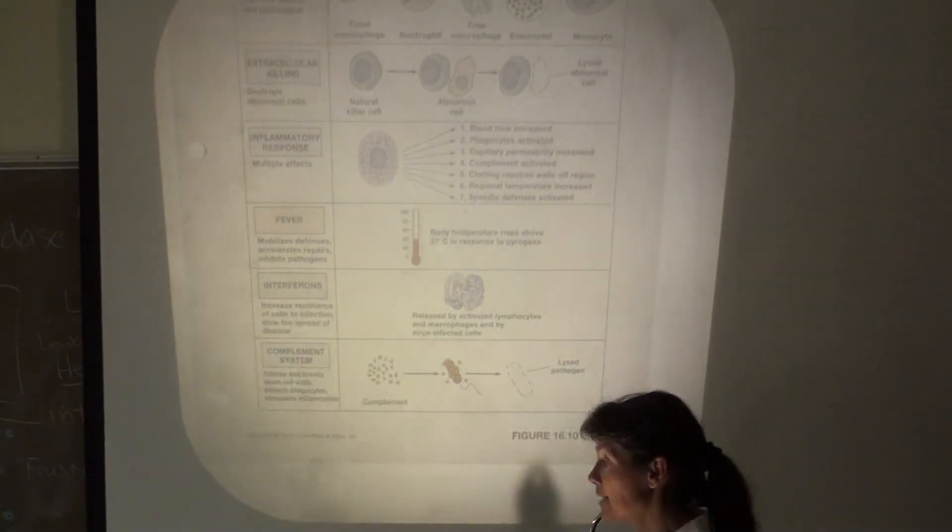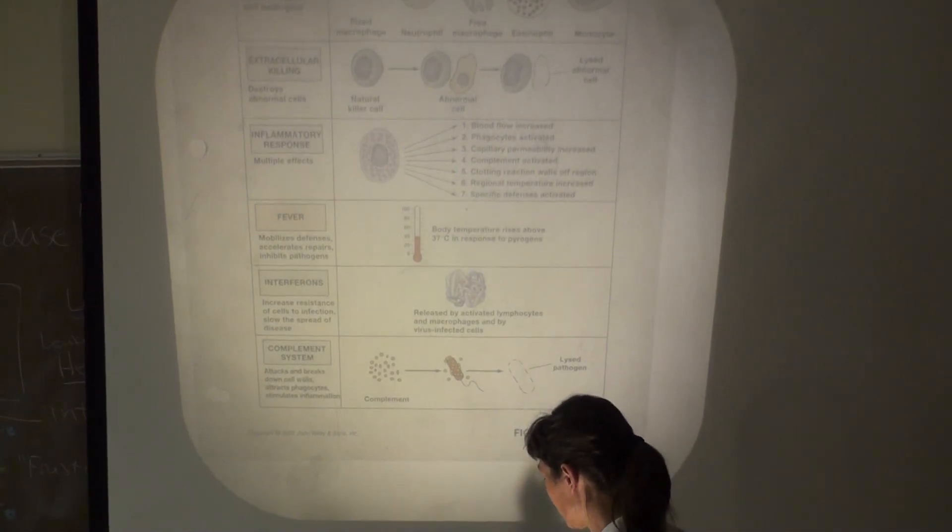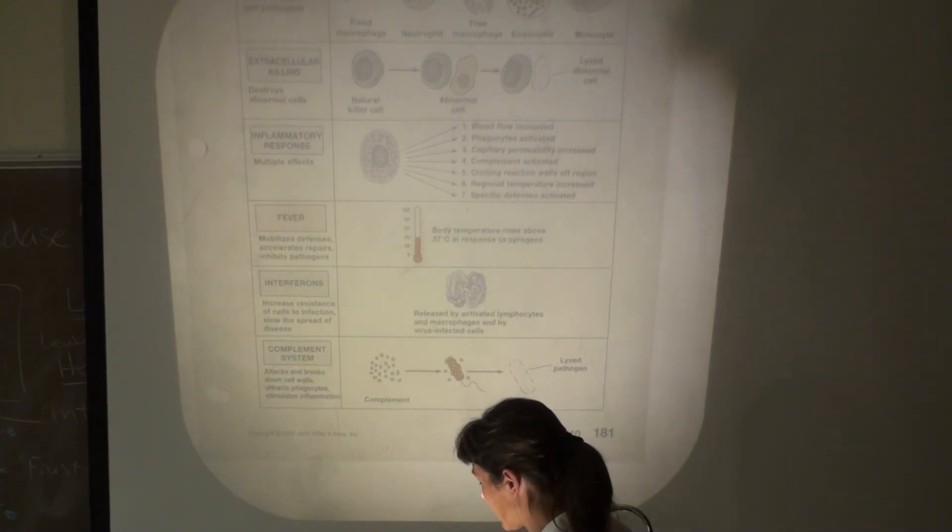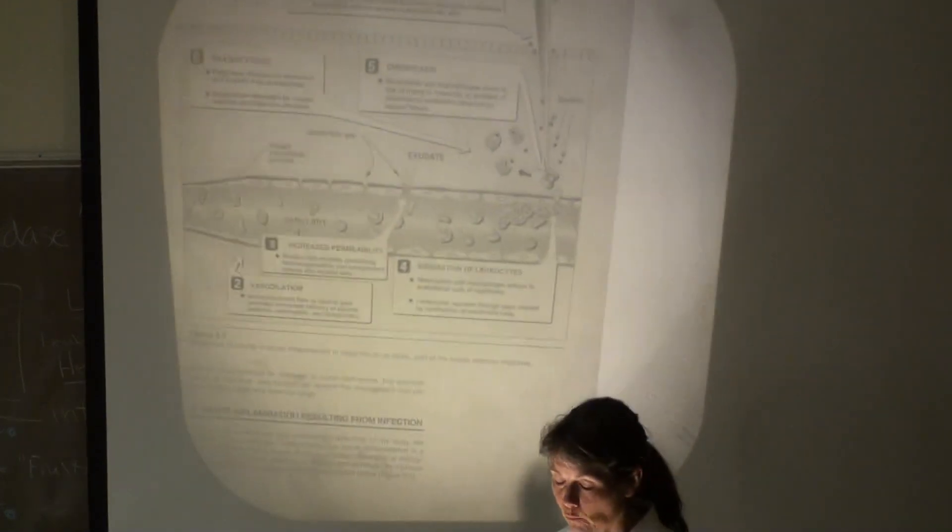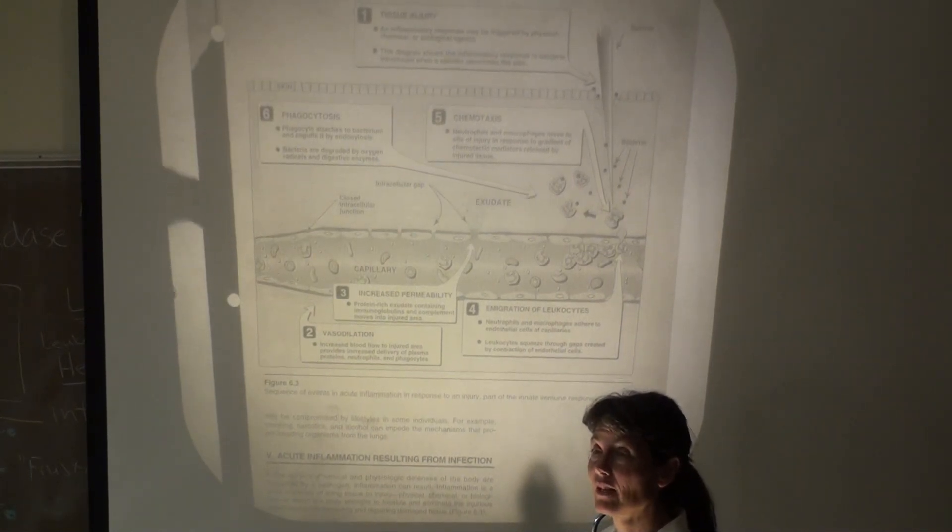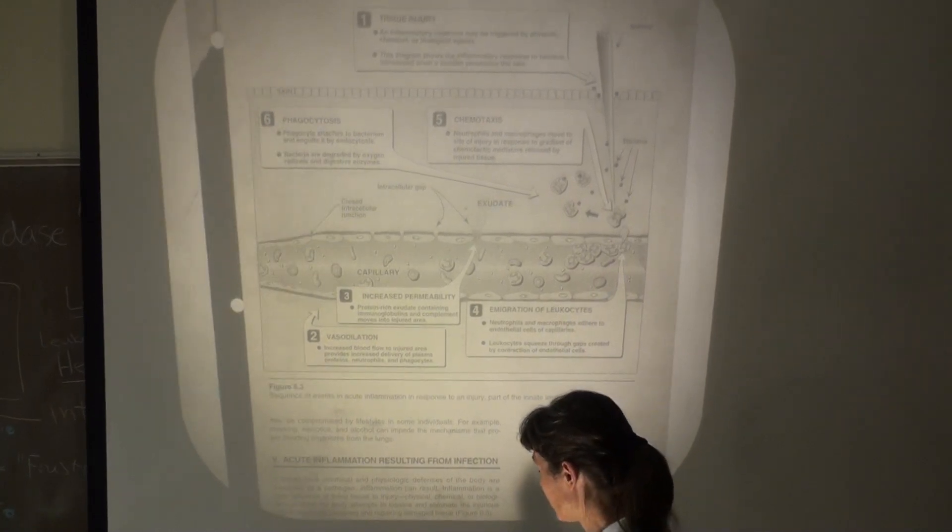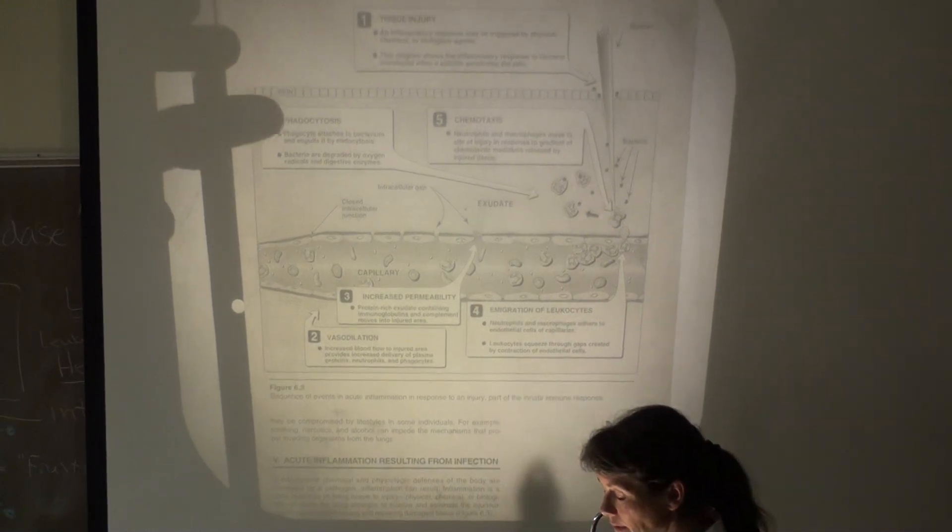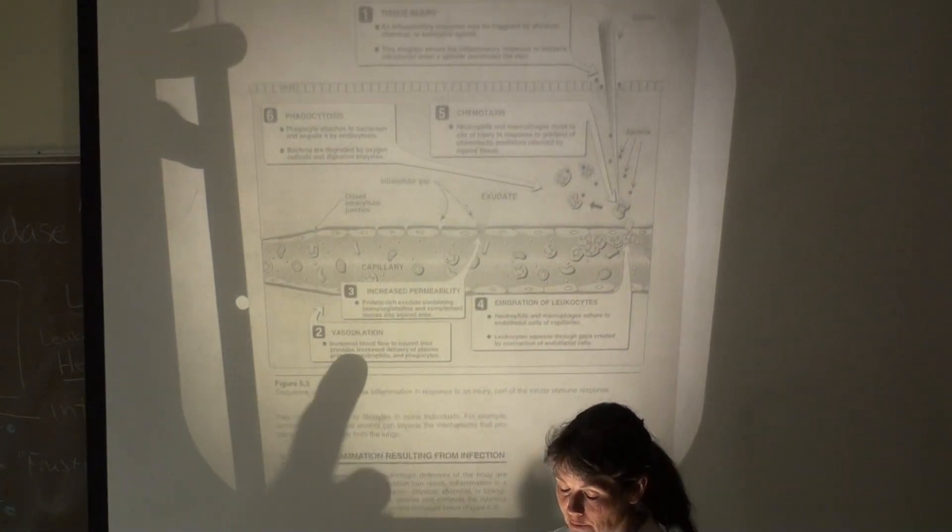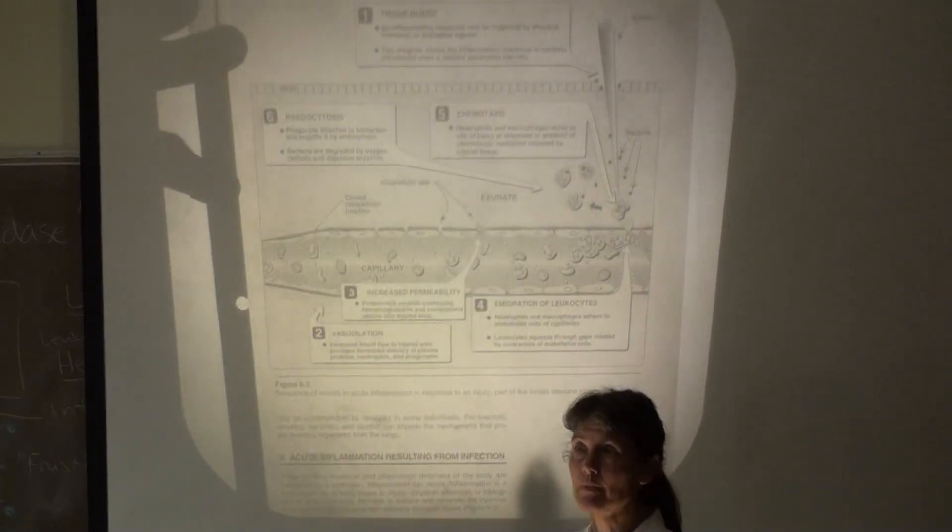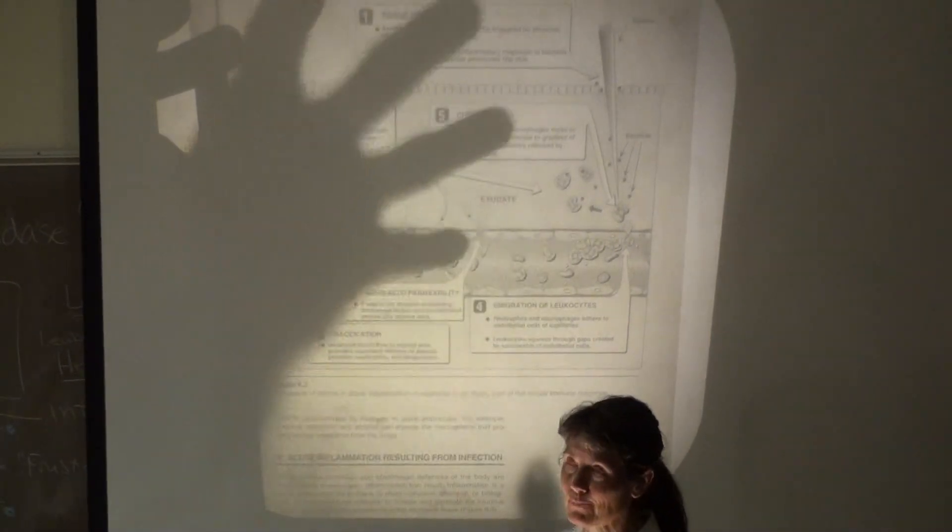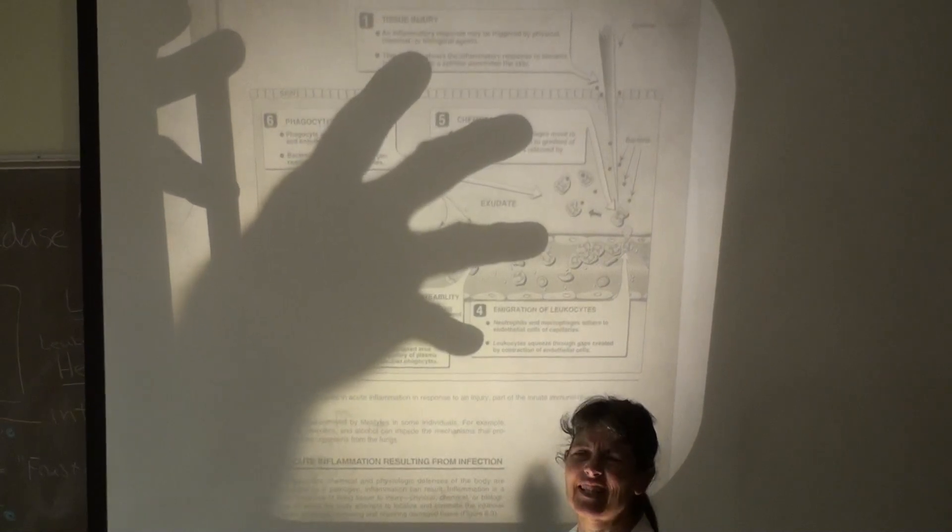So on the exam, what I'll have probably is a blanked out cartoon of inflammation. Those of you that have accessed the little practice quiz on D2L, one of the questions is to label the steps of the cartoon. This cartoon has shown up on exams before, and what I do is I write out all the fractions, and then I have a number of steps that are in mixed-up order, and you have to match the description of the step to each of these steps. So I guess what I'm telling you is you might see the cartoon on the exam.